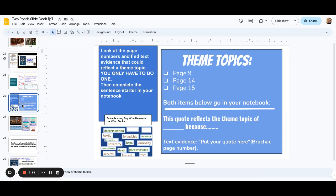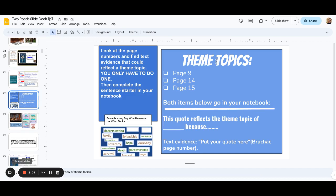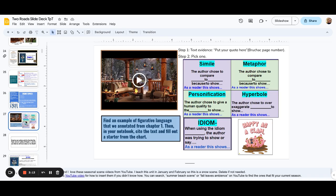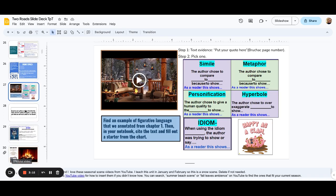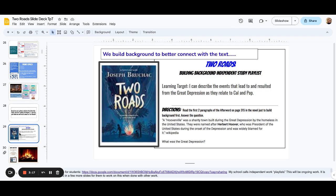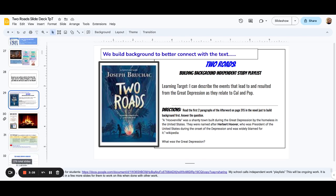So here's a review on theme topics. We're given the page number, they go to the page number, they find a quote, they support their thinking with a quote, and they choose what figurative language it is. This is all a review. Then here is building background. The more background knowledge they have on a novel, the better off they're going to connect to it. So this walks them through the Great Depression, Herbert Hoover, and what life was like during the time period of this book.